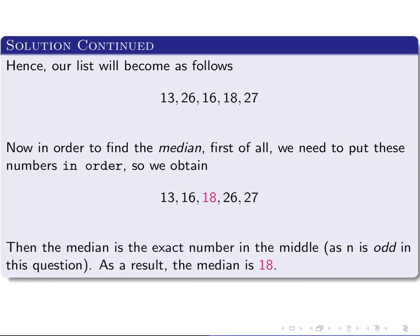in the middle, as n is odd. n is 5 here, so it's an odd number. As a result, 18 is the median.